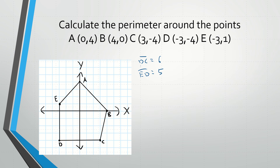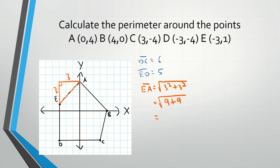Now let's find the slanted distances. To do that we surround the pentagon with right triangles, and then we can use the Pythagorean theorem to solve for the hypotenuse. Let's count to find the legs — that's a distance of 3 and a distance of 3 as well. So the distance EA is going to be the square root of 3 squared plus 3 squared. That equals the square root of 18, which we'll convert to a decimal in a moment.